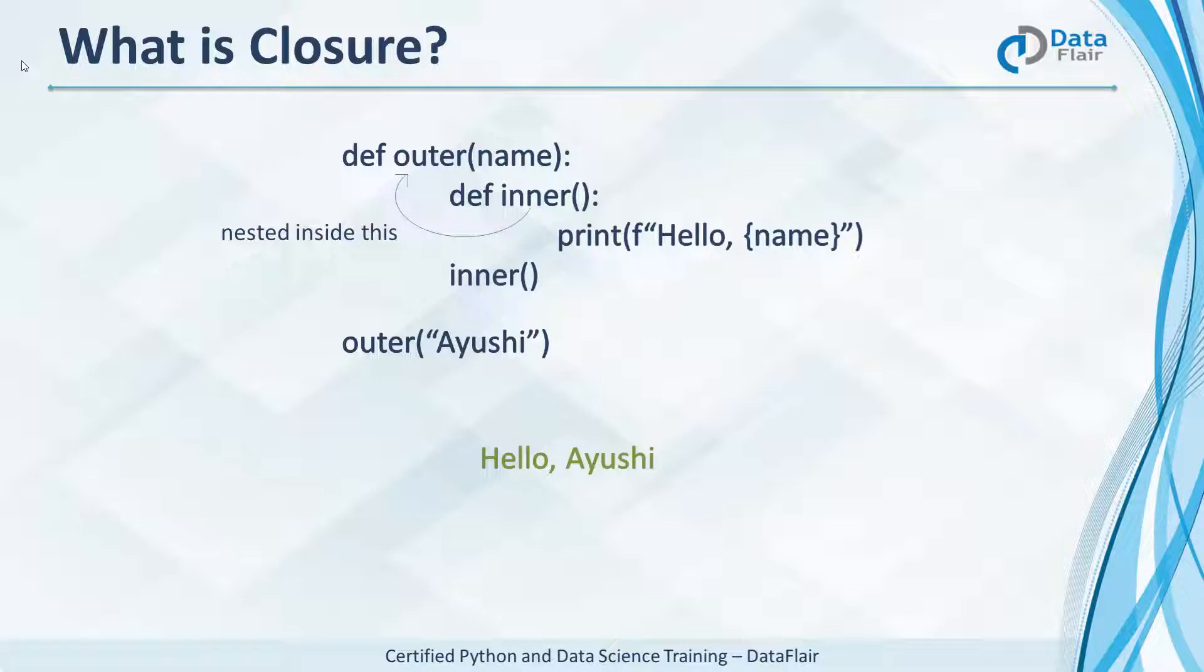But how does it know? How does it know we provided the argument Ayushi to the outer function? Well, name is non-local to inner. This means it can read name but not modify it.